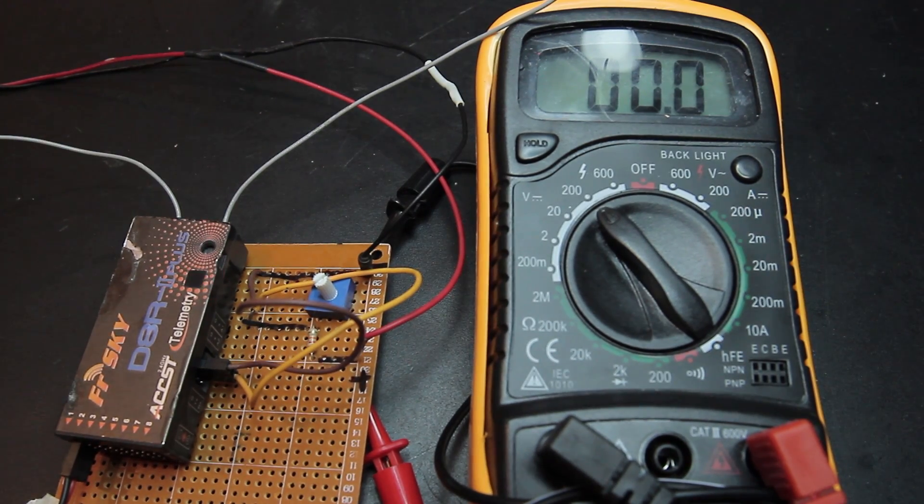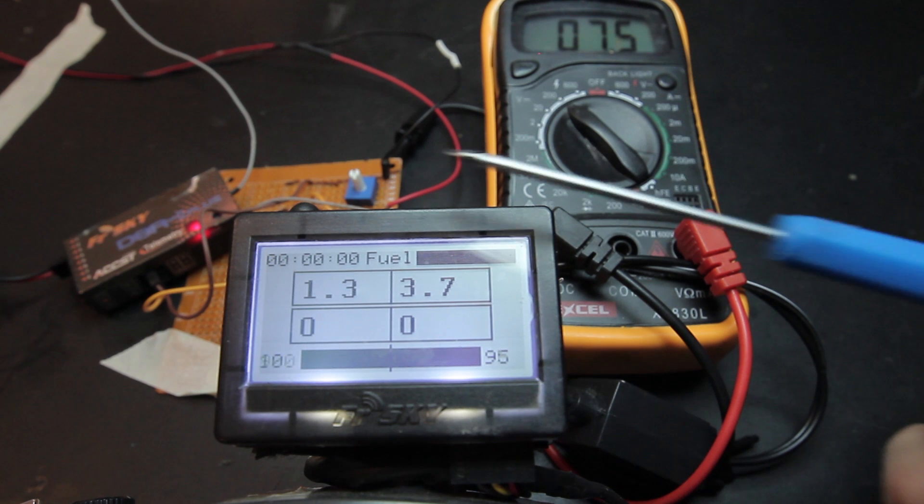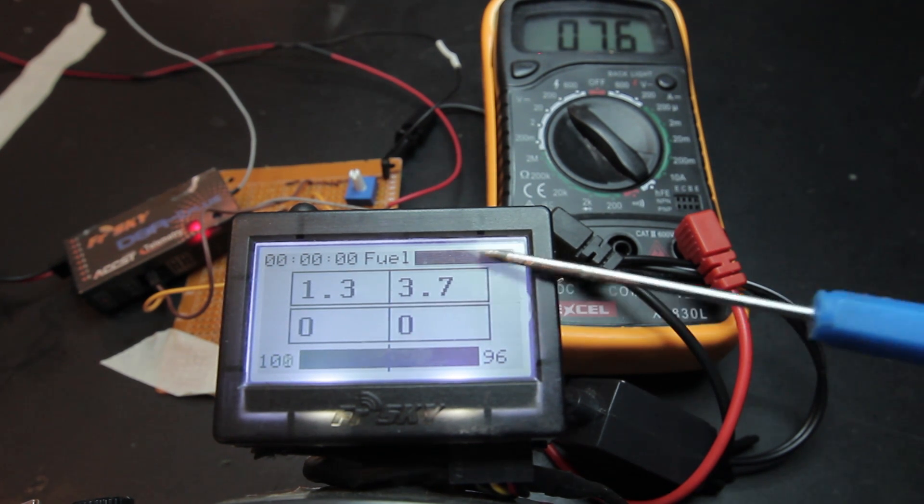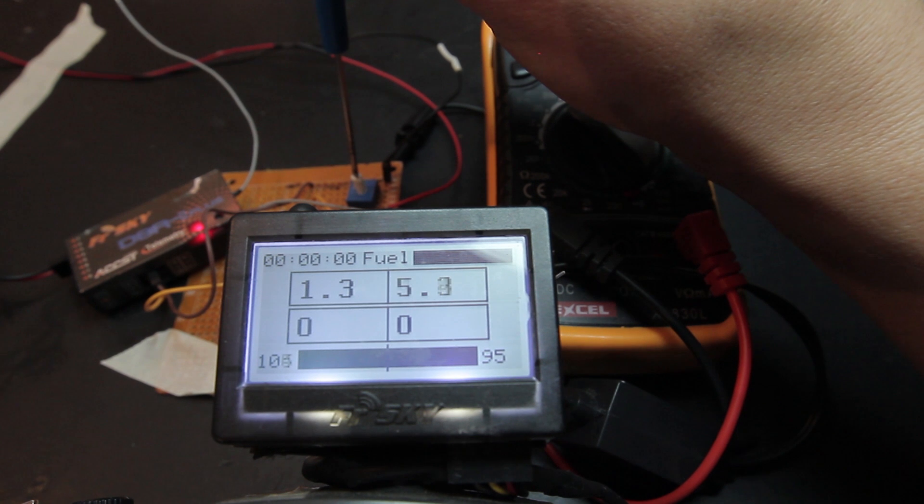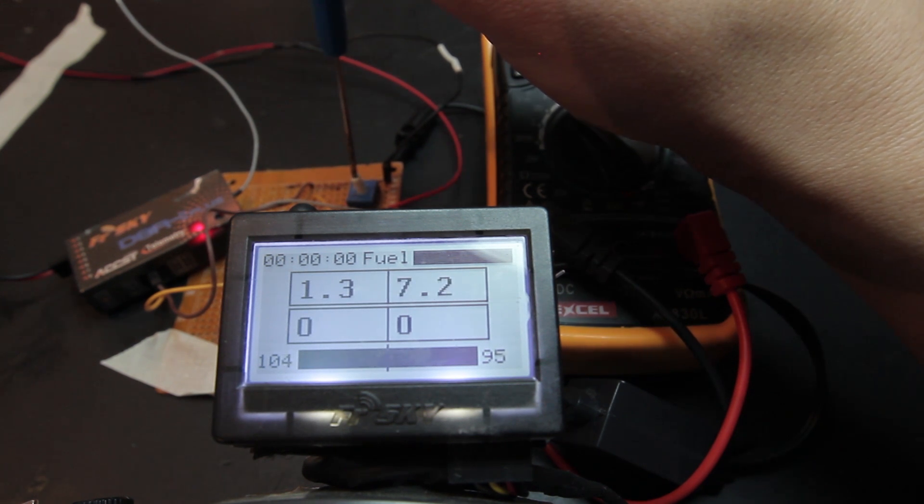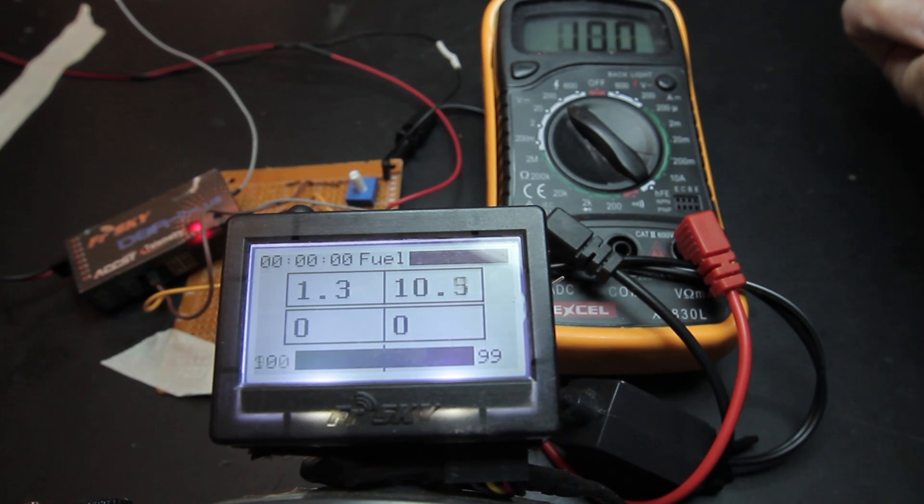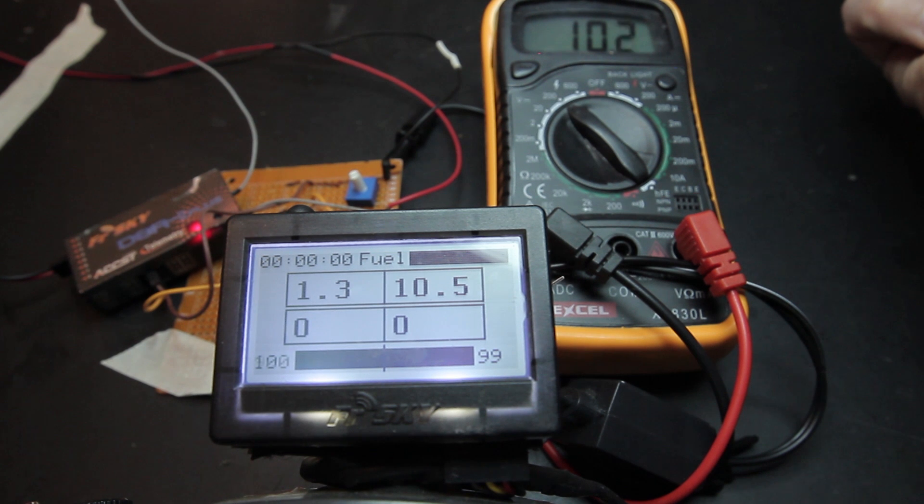Now it's time for the sensor calibration. Use a power supply with a constant voltage. Turn on your radio and check the voltage value. Adjust the potentiometer on your sensor until you get the right value. Adjust the voltage on your power supply and recheck the value on your transmitter.